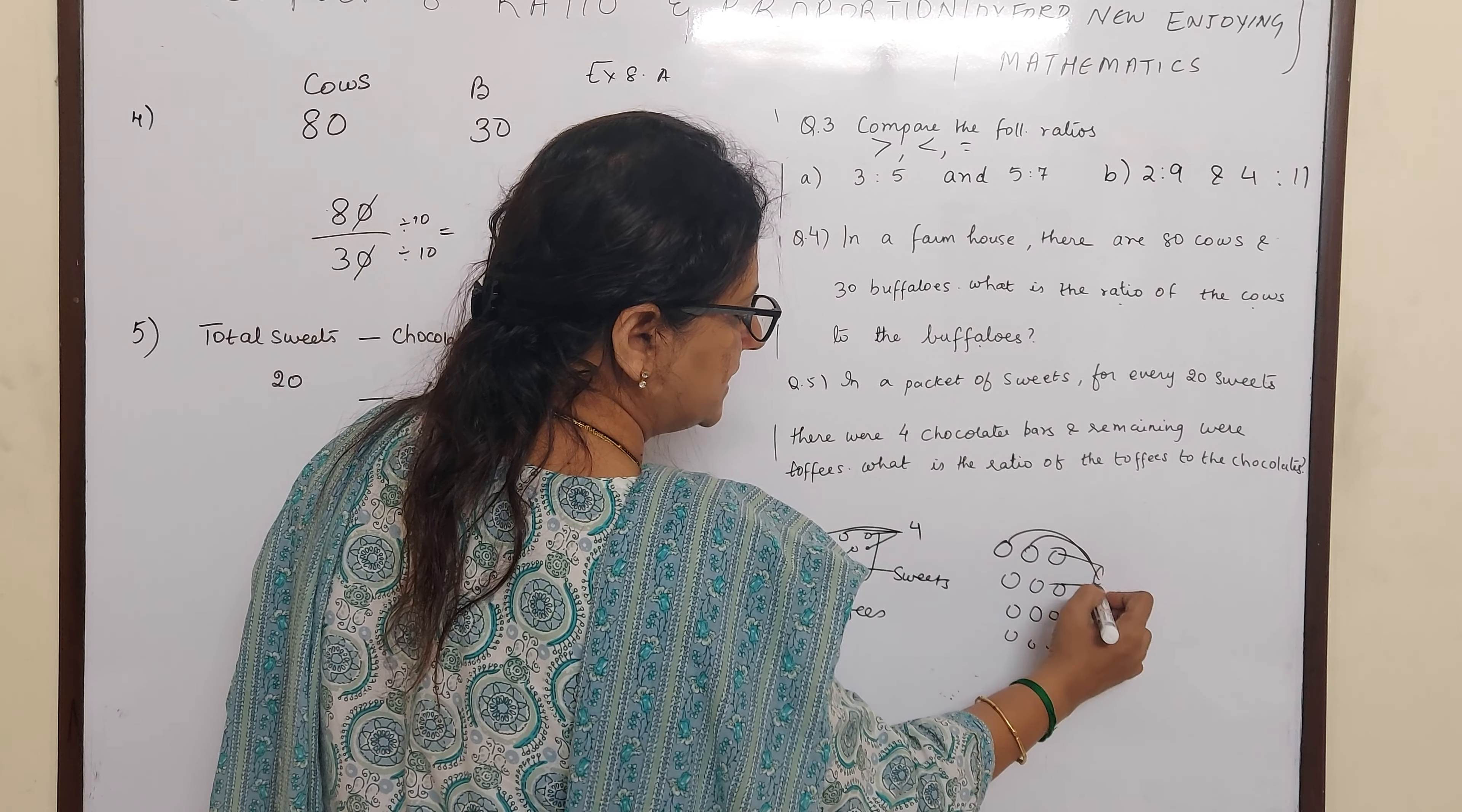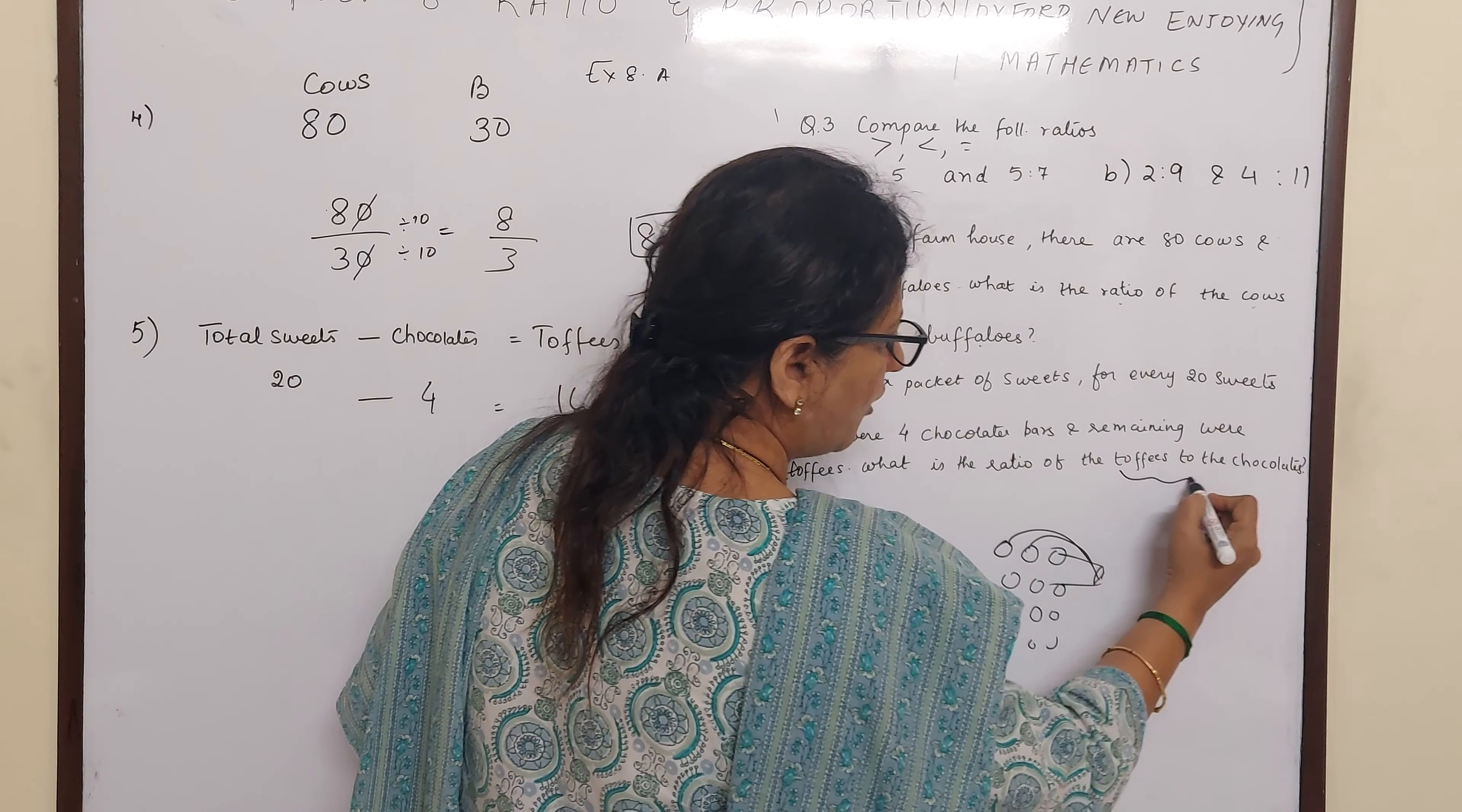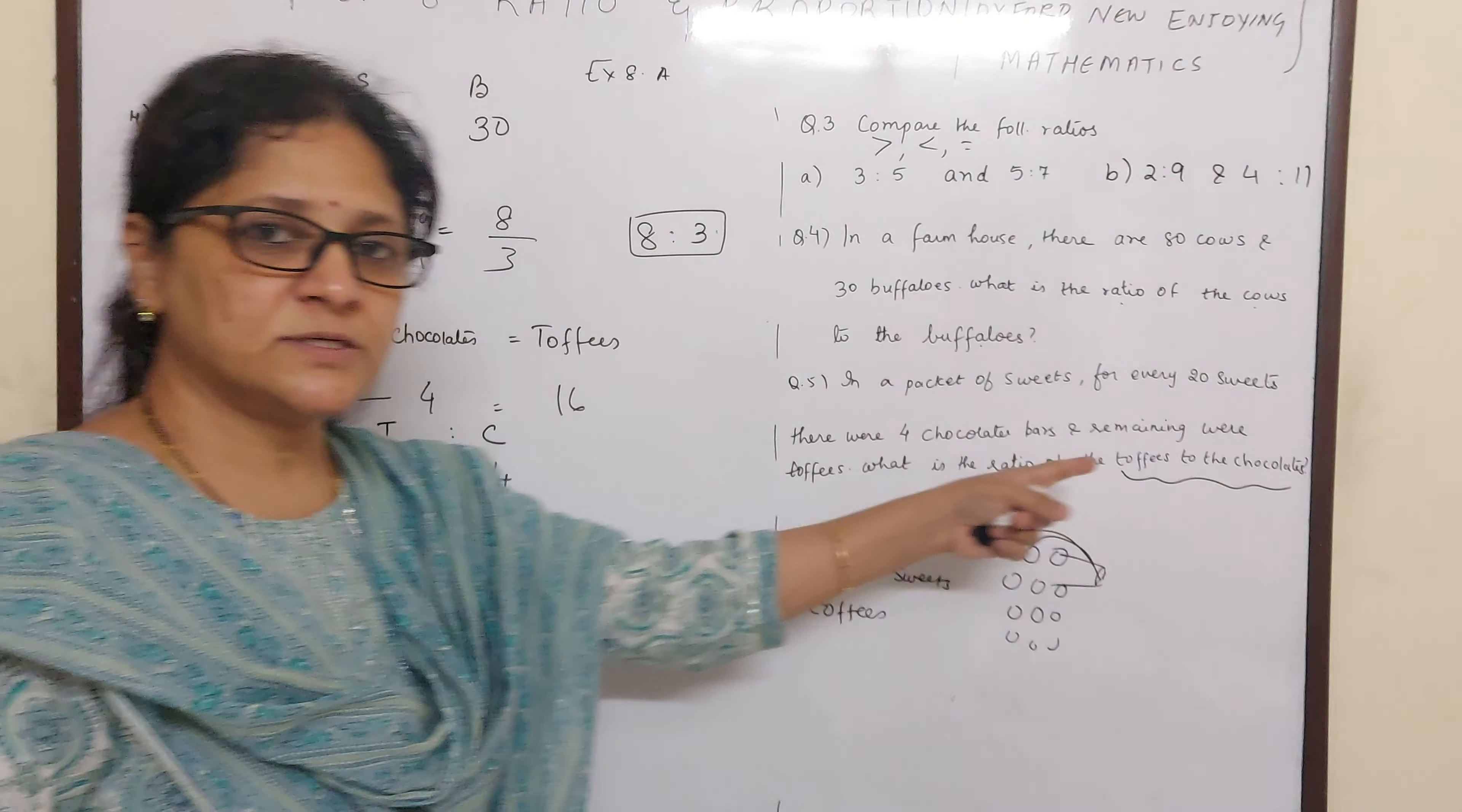So first you should arrive at this. Out of in a packet of sweets for every 20 sweets, that means there are so many sweets. Out of which 4 are chocolates. These are chocolates. Then what are remaining? How you will get the remaining toffees? Out of the 20 subtract the chocolates. So there you will get remaining. So remaining is only toffees. Now what is the ratio of toffees to chocolate? Now this is very important. Toffees to chocolate. That means you should write toffees number first. This is toffees, 2 chocolates. Now how much is chocolates? Sometimes they may ask you chocolates to total sweets also. So the order is important.